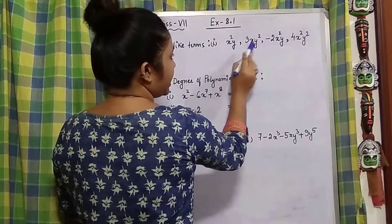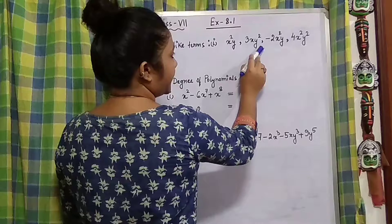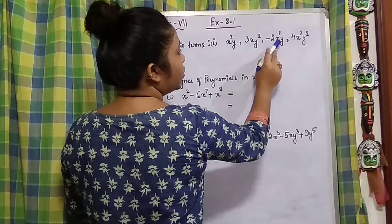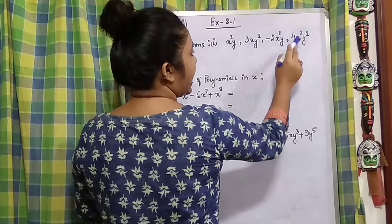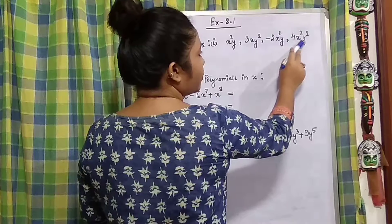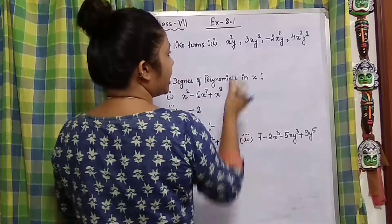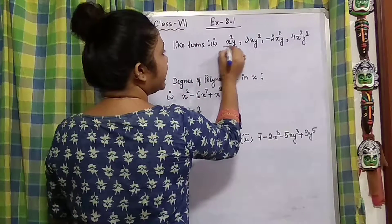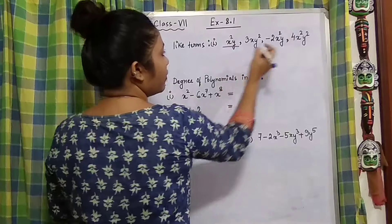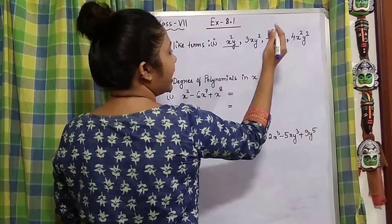x²y, 3xy², -2x²y, and the last one is 4x²y². So you can understand from here which are the like terms: x²y and -2x²y.